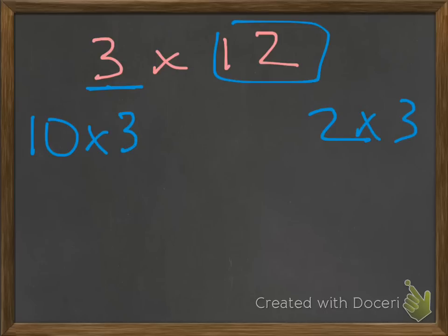That makes it much easier. So now when we multiply 10 times 3, that's easy—that's 30. And 2 times 3 is 6. We add these together and we get 36. Much easier.